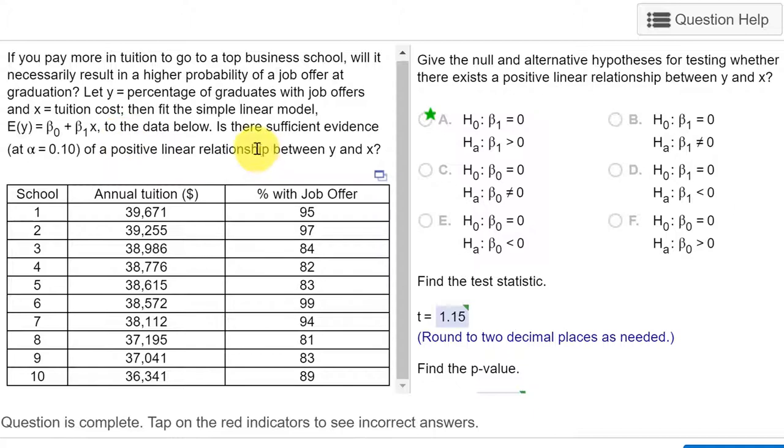The question is, is there sufficient evidence of a positive linear relationship between y and x? Well, remember in our equation, the slope of a line, we've got y equals mx plus b, and m is the slope, or beta 1 is the slope.